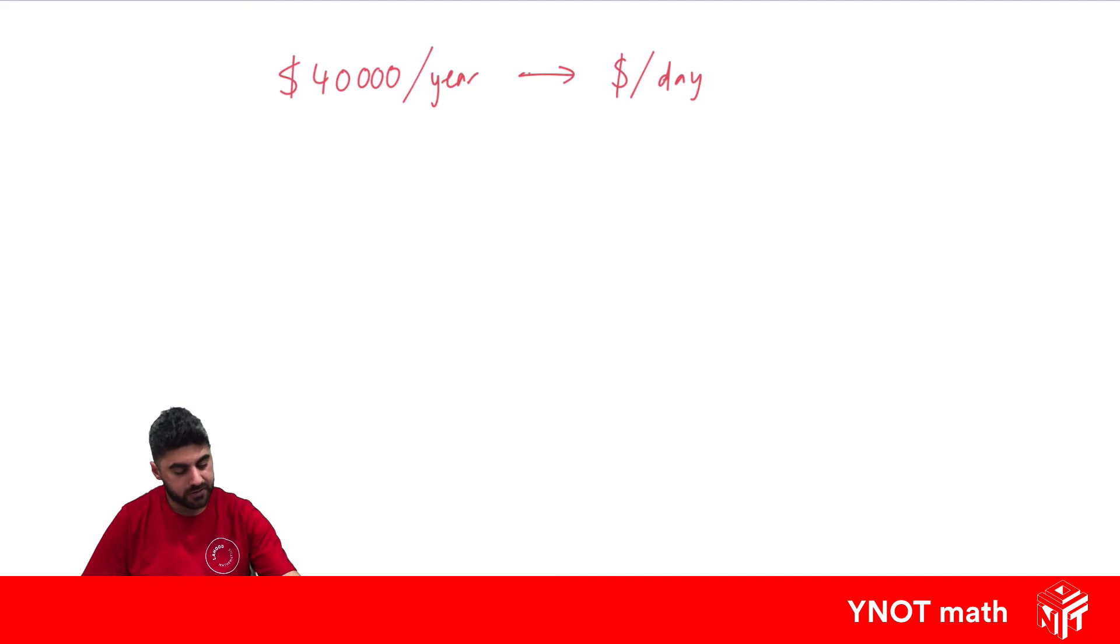So let's write as a fraction first. So that's $40,000 over one year. Dollars I want to keep the same, so we can just write that again. We don't have to change that one. The years I want to change. To change years to days, I need to multiply by 365.